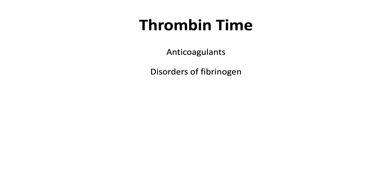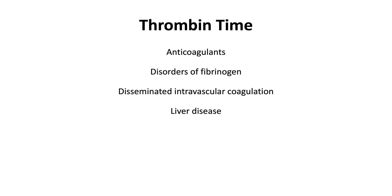Thus the thrombin time is prolonged in conditions that predispose to hypofibrinogenemia, including disseminated intravascular coagulation and liver disease. The thrombin time is also prolonged in hypoalbuminemia and with any substance that interferes with fibrin polymerization, including paraproteinemias that occur with multiple myeloma or amyloidosis.